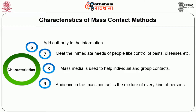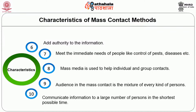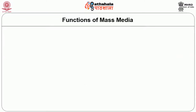The audience in mass contact is a mixture of every kind of person. Mass contact communicates information to a large number of persons in the shortest possible time, because individual and group contact methods cannot reach a large audience. When extension workers desire to reach a large audience, they have to go in for mass contact methods. There are four main functions of mass media.